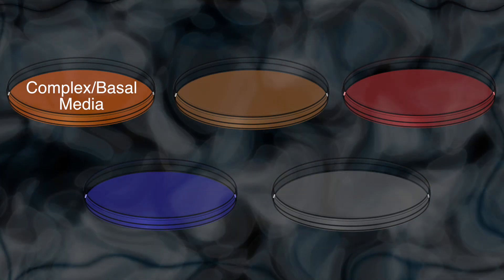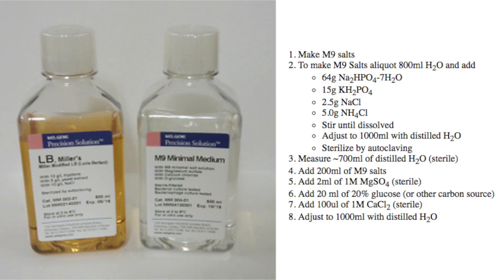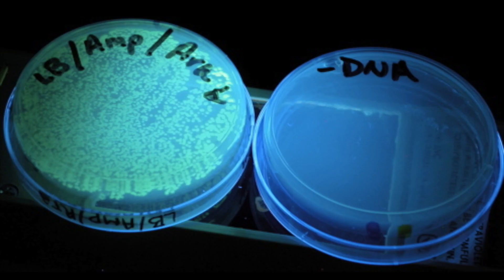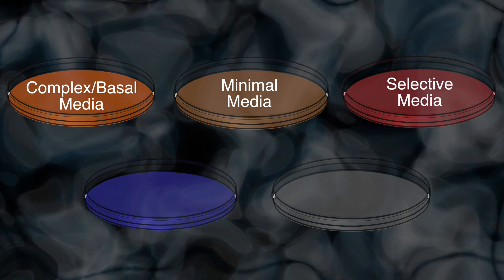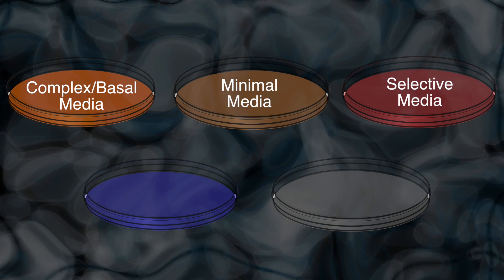The first example of more controlled media is minimal media. The idea is that people figured out the exact minimum of every nutrient that a growing organism needs. To make minimal media you get all the individual chemicals and the carbon source of your choice, weigh them out, combine them, and add water. This way you can change the concentration of any individual component and see how it affects the growing organism. You can also use this to allow the growth of one sort of organism over another, which leads us to selective media.